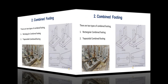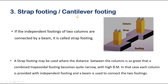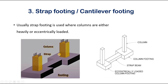The next type of footing is strap footing, also called cantilever footing. If the independent footings of two columns are connected by a beam, it is called strap footing. Strap footing may be used where the distance between columns is so great that a combined trapezoidal footing becomes too narrow with higher bending moments. In that case, each column is provided with an independent footing connected by a beam. This is usually preferred when columns are heavily or eccentrically loaded.